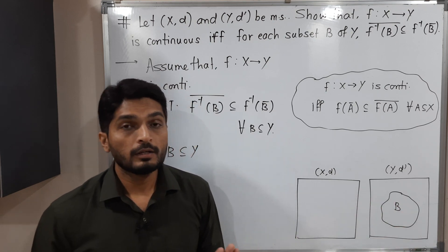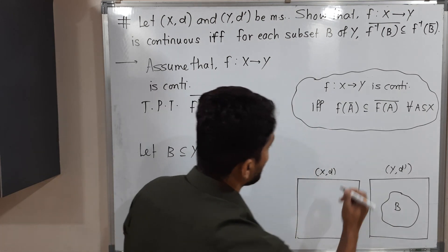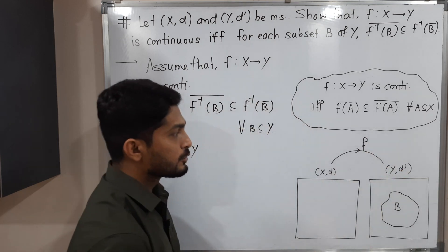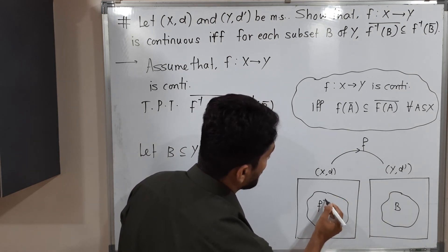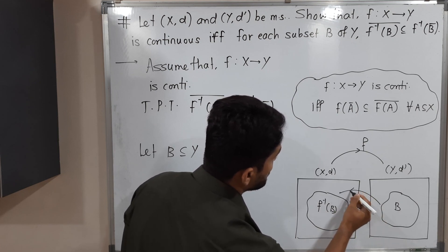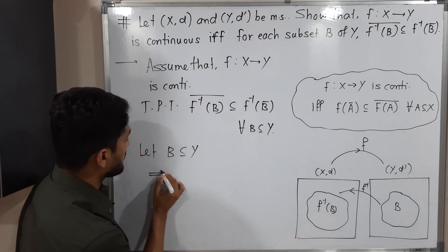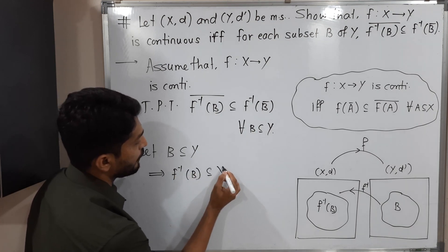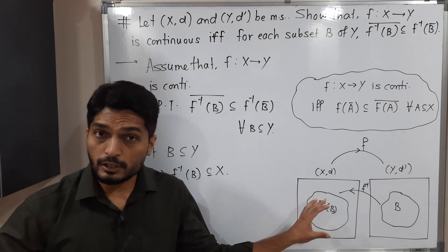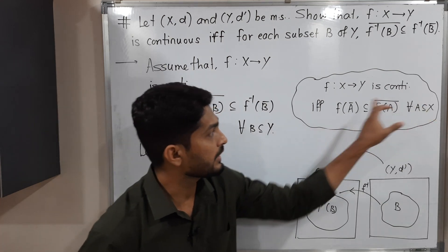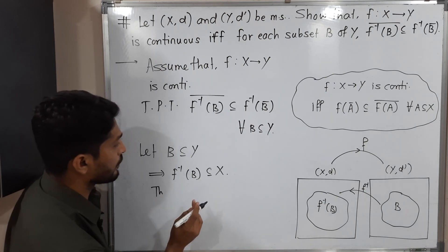Since we need a subset of X to use that result, I am going to take the inverse image of B. We have the function f from X to Y, so its inverse image is f⁻¹(B), which is a subset of X. Now we have the subset of X we were looking for.